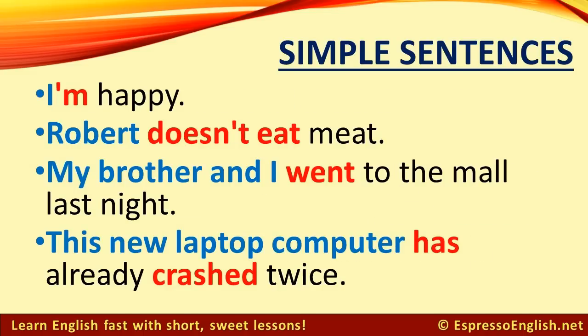Here are some examples of simple sentences. I'm happy. Robert doesn't eat meat. My brother and I went to the mall last night. This new laptop computer has already crashed twice. The subjects of these sentences are in blue, and the verbs in these sentences are in red.